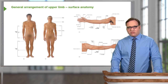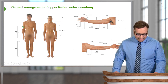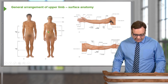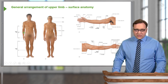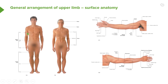Looking at the general arrangement of the upper limb, we have a body plan of both the male and female. On the male, we can see the upper limb indicated, specifically the arm region, which is connected to the trunk by way of the shoulder. Connecting the arm to the forearm is the elbow joint, and most distally we find the hand, connected to the forearm via the wrist joint.